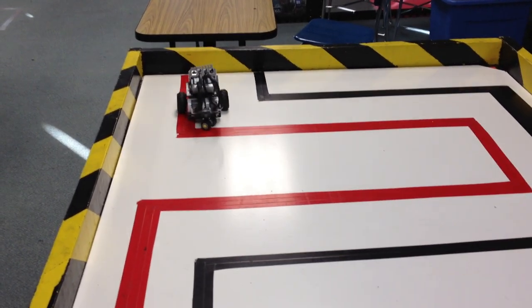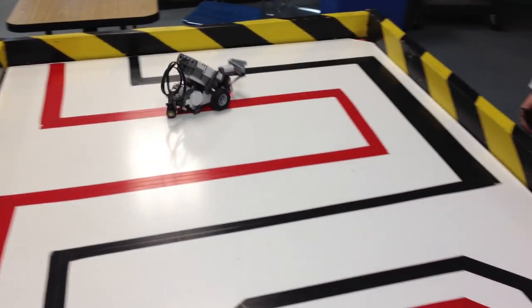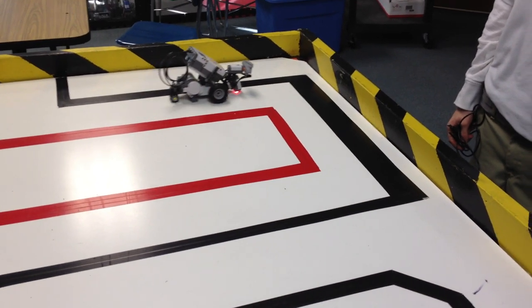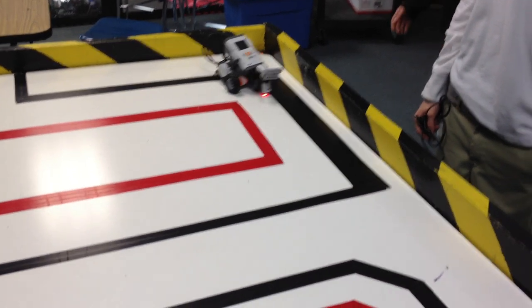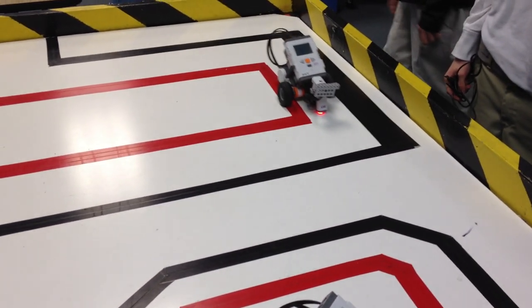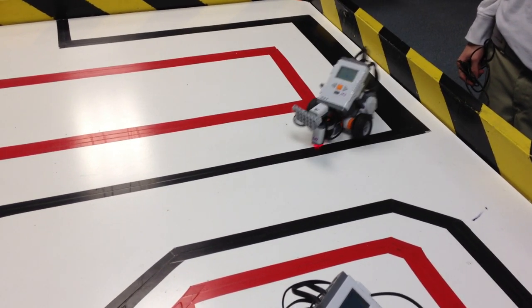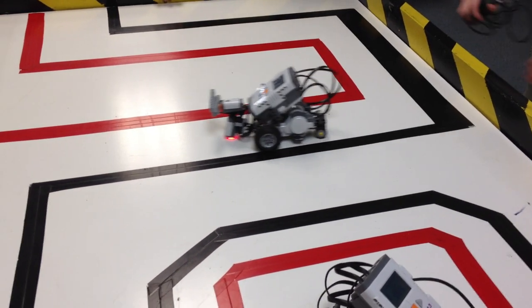When it hits a wall the first time, it's going to turn around and flip the logic. Notice that when it hits black now, it's turning right instead of left on its way back through the maze. Looking good so far, guys.